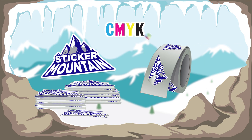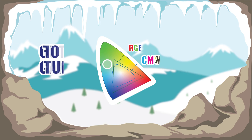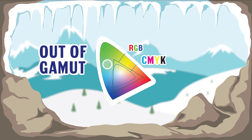When trying to match a color that lies outside of your color space, it is called out of gamut. This means that space cannot produce the color you want accurately.